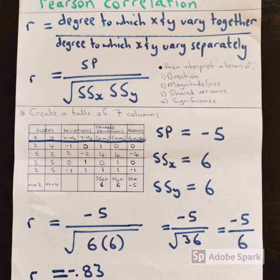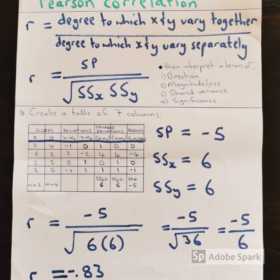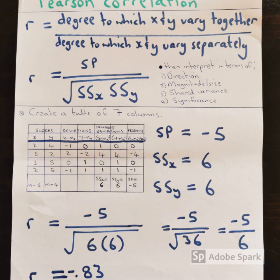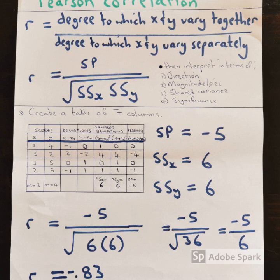You can see here that I replaced SP with minus 5 in the numerator and then in the denominator, that is in the square root, that is 6 times 6. So the 6 is SSx and then the other 6 is SSy.